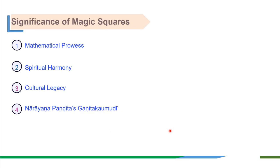Magic squares showcased the advanced mathematical knowledge and ingenuity of ancient Indian mathematicians. Use of magic squares reflected a deep connection between mathematical principles and spiritual beliefs within Indian society. Presence of magic squares in Indian mathematics signifies a lasting contribution to global mathematical traditions.